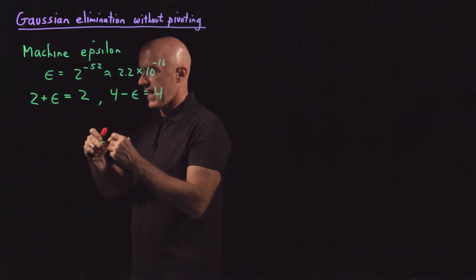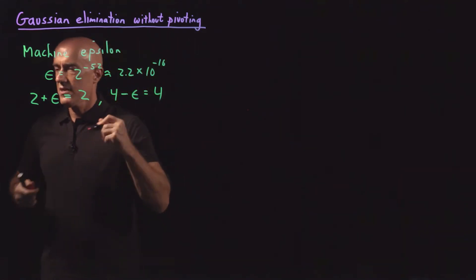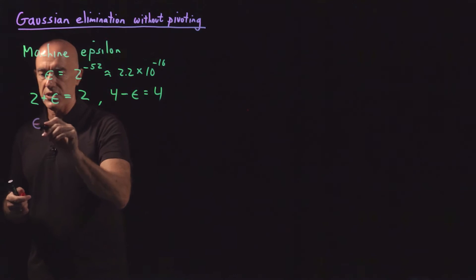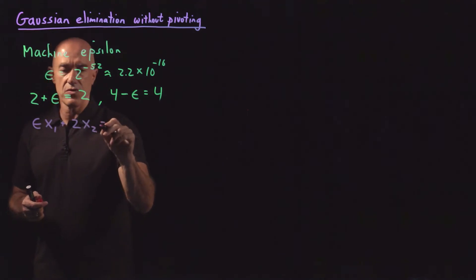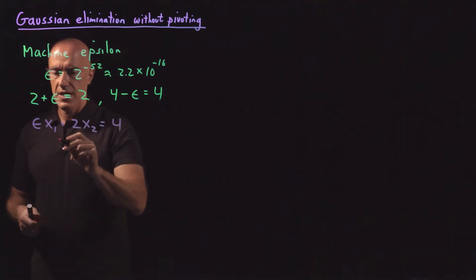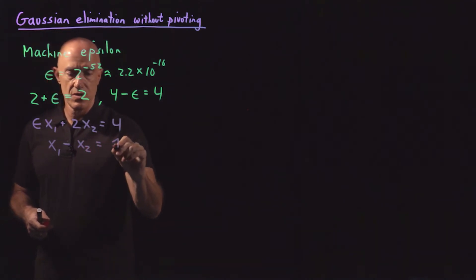So let's look at a system of equations to solve. So I'm going to solve the equation epsilon times x1 plus 2x2 equal to 4. And then x1 minus x2 is equal to 1.